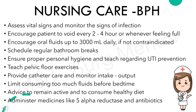Nursing cares for a patient with benign prostatic hyperplasia include: assess vital signs and monitor signs of infection, encourage the patient to void every 2-4 hours or whenever feeling full, encourage oral fluids up to 3000 ml daily if not contraindicated, schedule regular bathroom breaks, ensure proper personal hygiene and teach regarding urinary tract infection prevention, teach pelvic floor exercises, provide catheter care and monitor intake and output, limit consuming too much fluid before bedtime, advise to remain active and consume a healthy diet, and administer medications like 5-alpha reductase inhibitors and antibiotics.